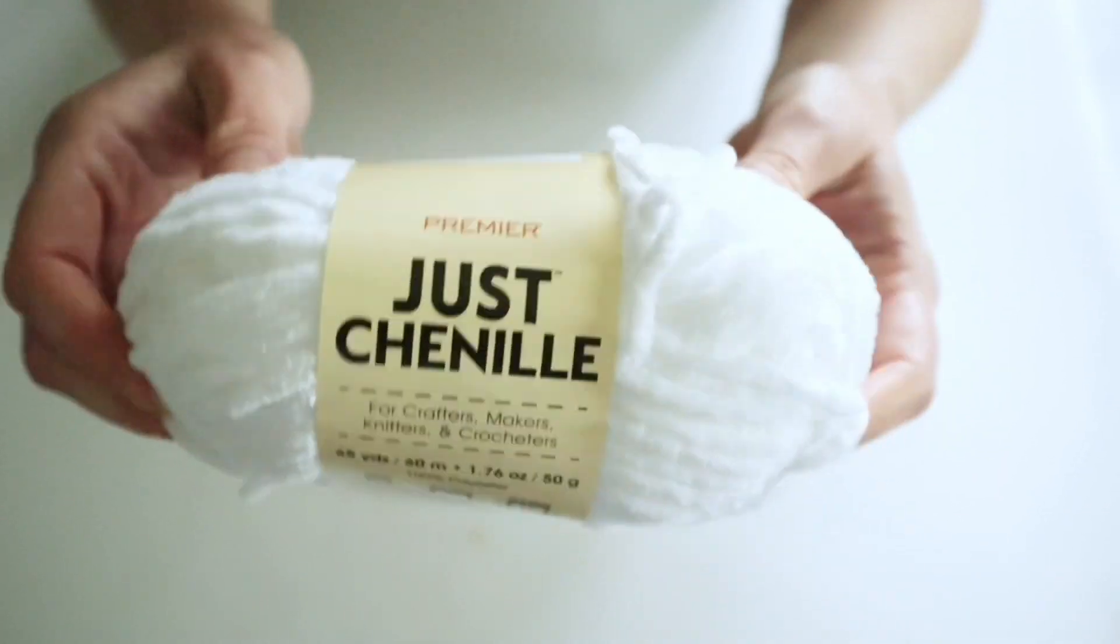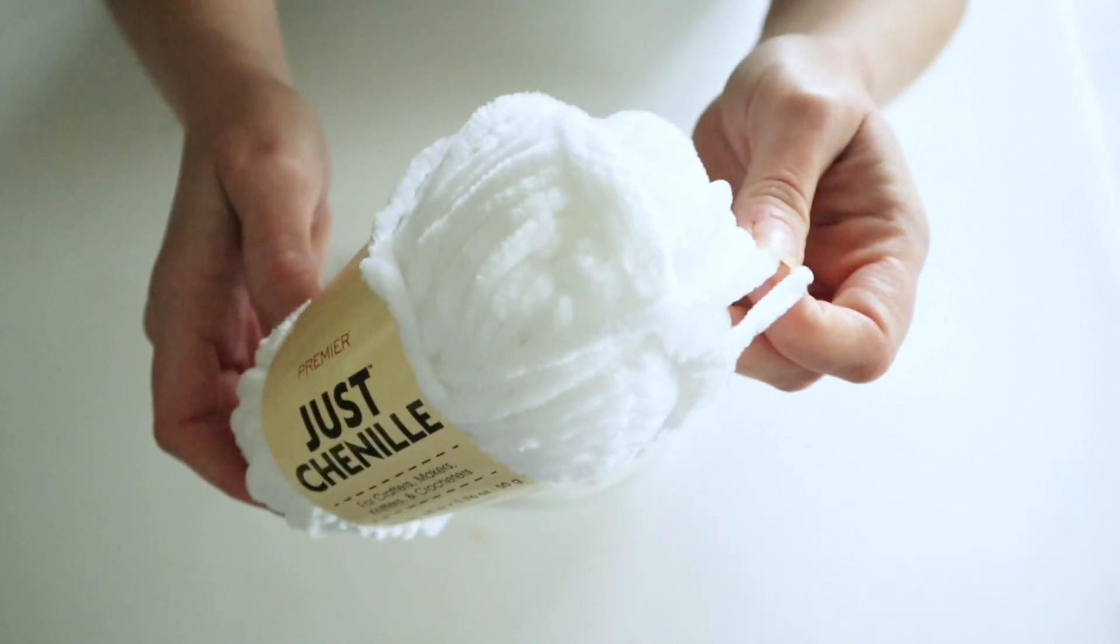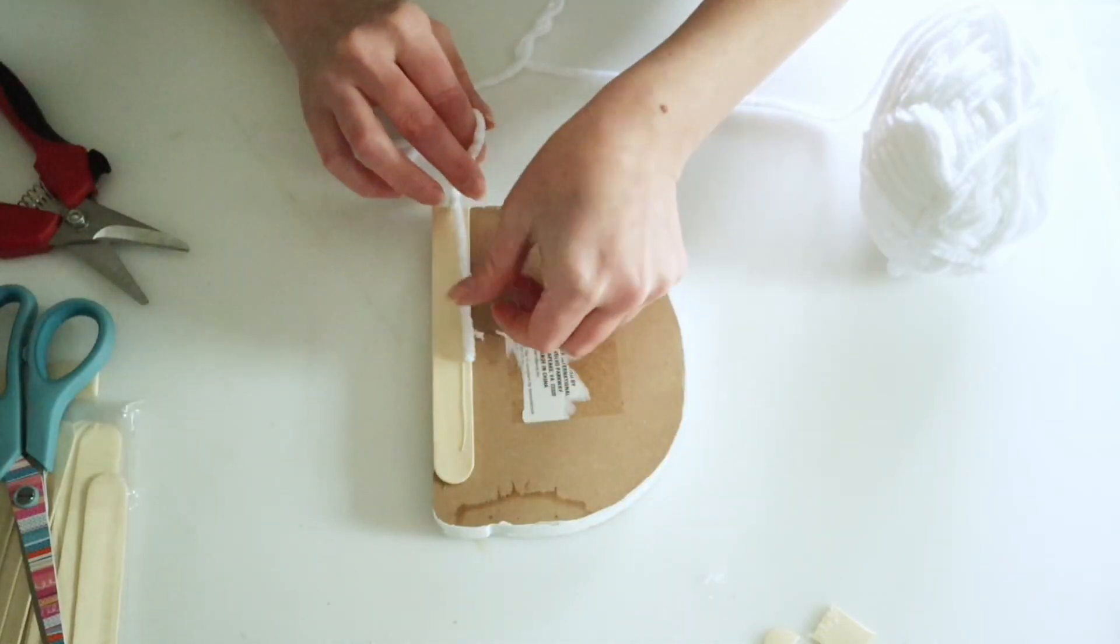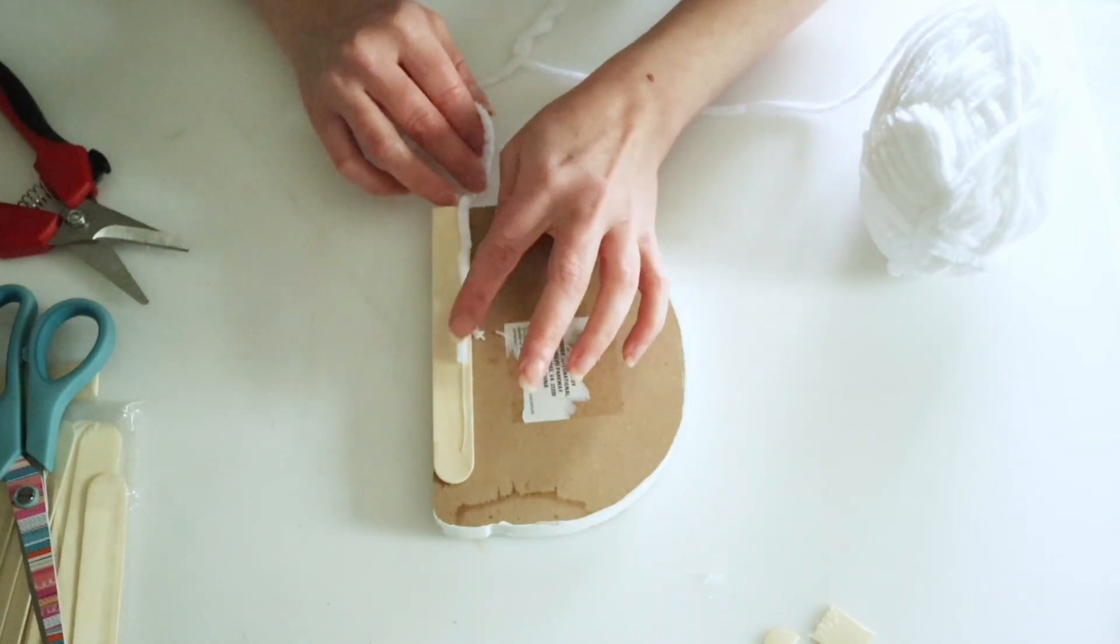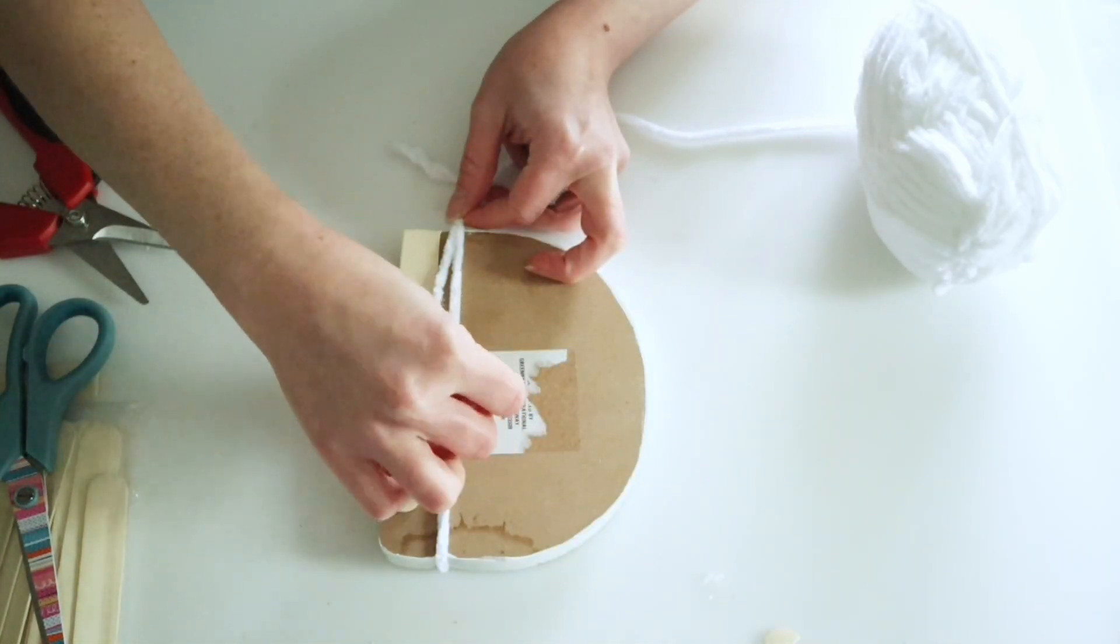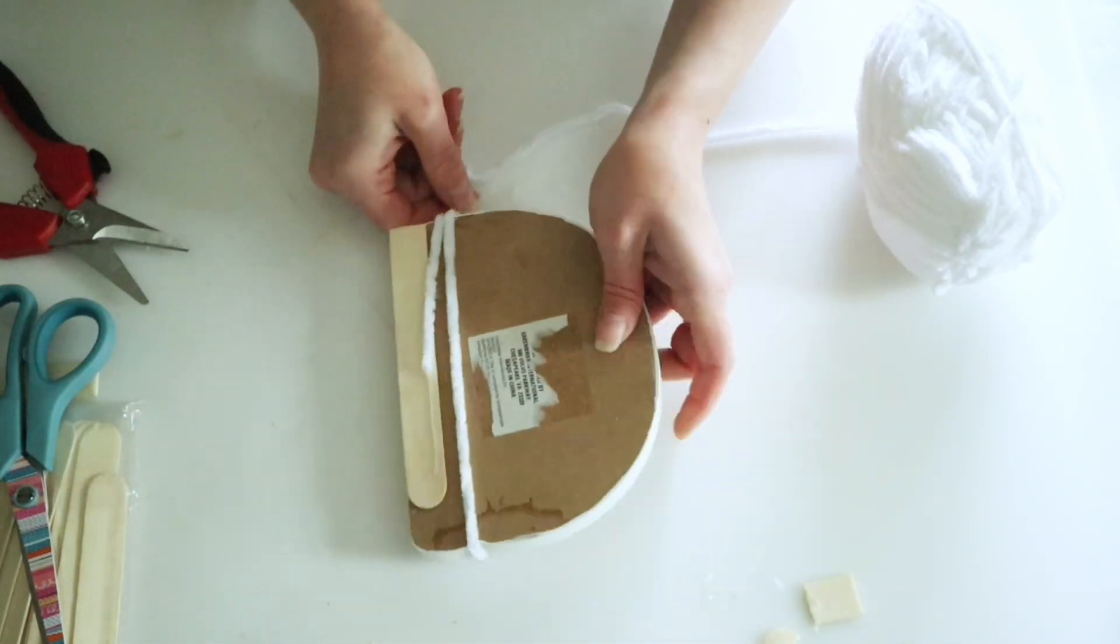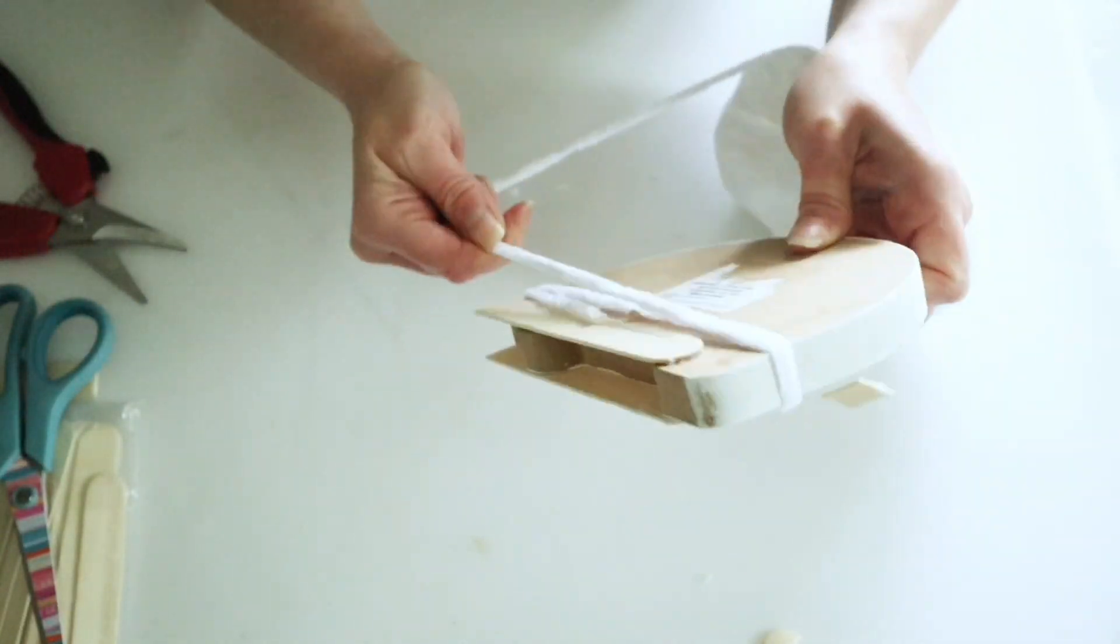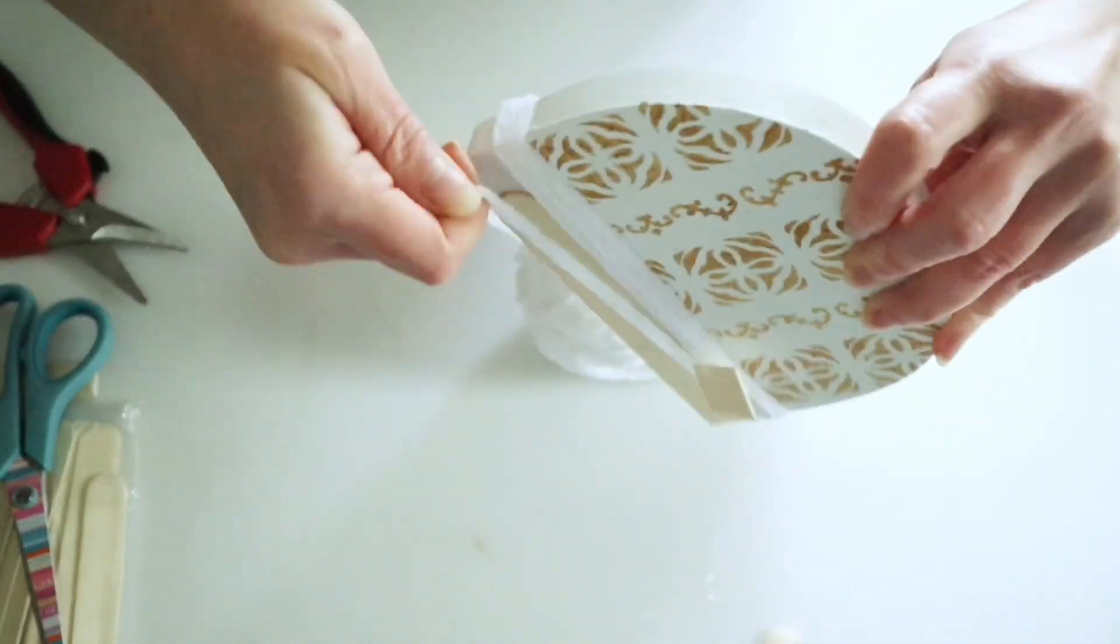So for the bottom part of my little hats, I found this Just Chenille yarn from Dollar Tree and that's what I'm going to be using to cover up this bottom and I'm just gluing as I go and wrapping this around that bottom part to cover up the tires and those craft sticks.